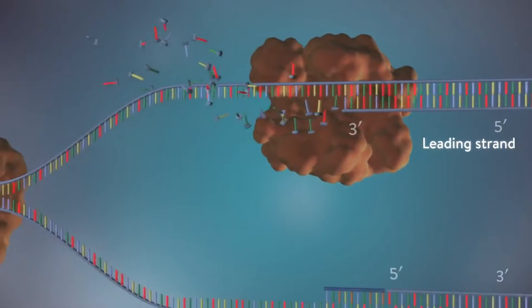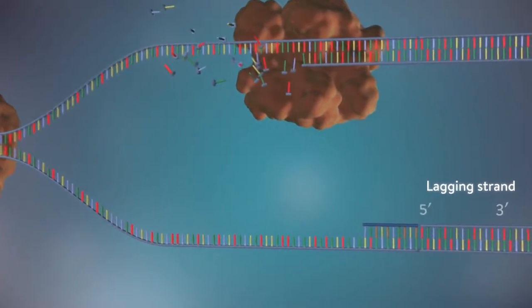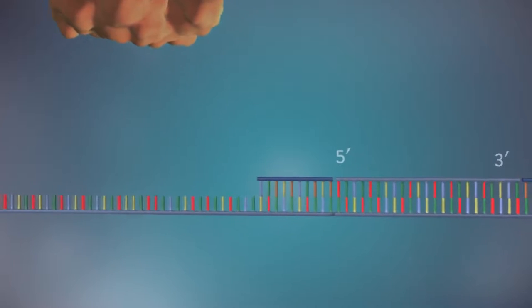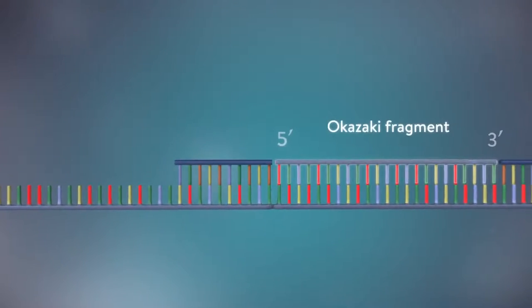The other strand, the lagging strand, cannot be made in this continuous way because it runs in the opposite direction. The DNA polymerase can therefore only make this strand in a series of small chunks called Okazaki fragments.